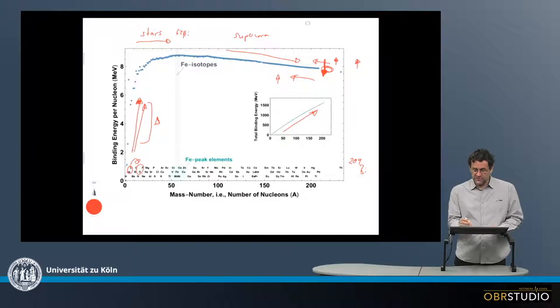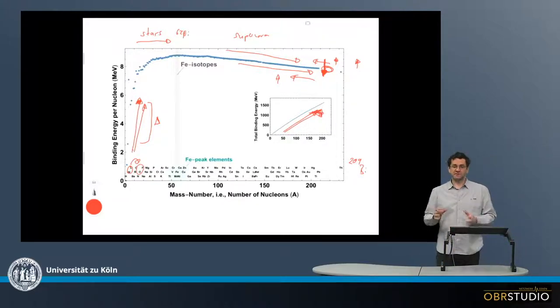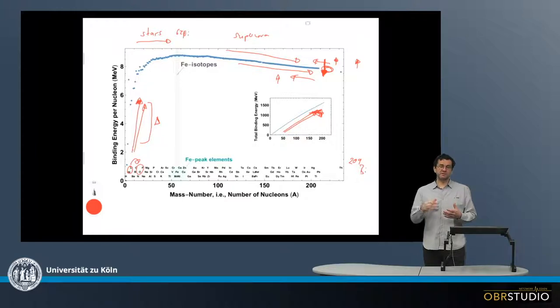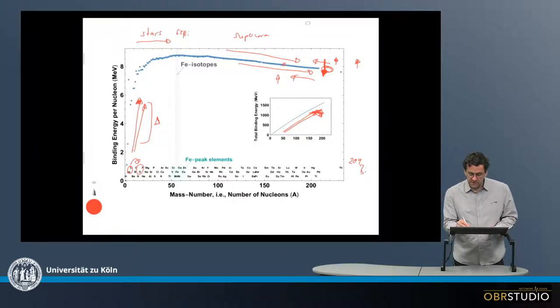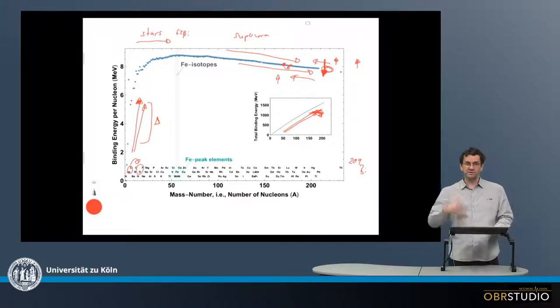However, although the energy per nucleon decreases in this direction, the total energy in these nucleons still increases. Because this is the binding energy per nucleon, so if I times this energy times 160, and this times 170, this will still be an increase in the total energy of the entire core.